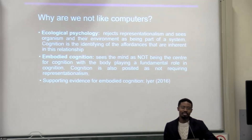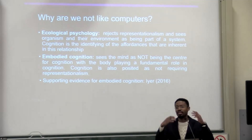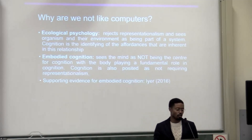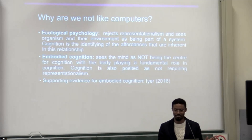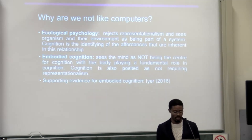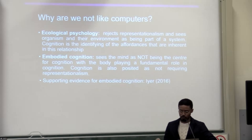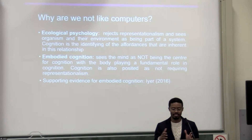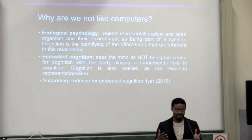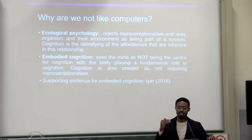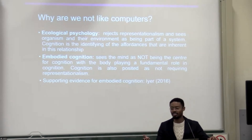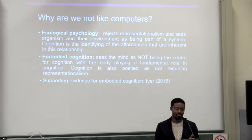Theories that oppose computationalism are grouped under the umbrella term of post-cognitivism. Post-cognitivism is basically anti-computation — they don't think we think through representations, nor that representations are necessary for cognition. Two examples I use in this paper are ecological psychology and embodied cognition. Ecological psychology is basically the idea that an organism and an environment exist within and as a system, and that cognition involves the perception of affordances — what the environment and the relationship between organism and environment allows for, what actions can happen within that.